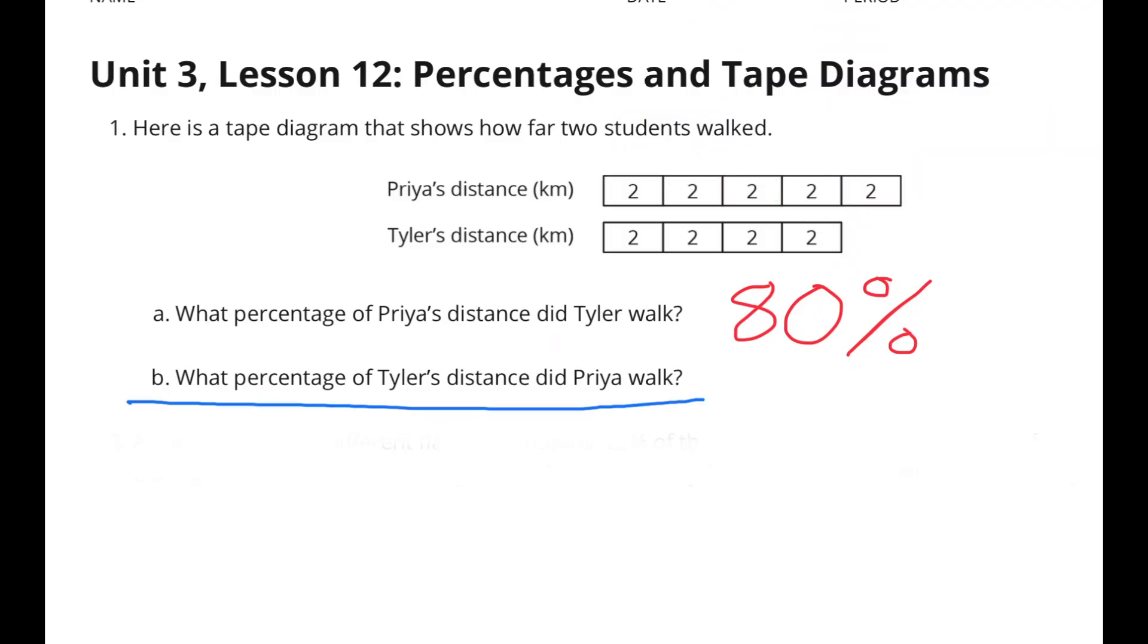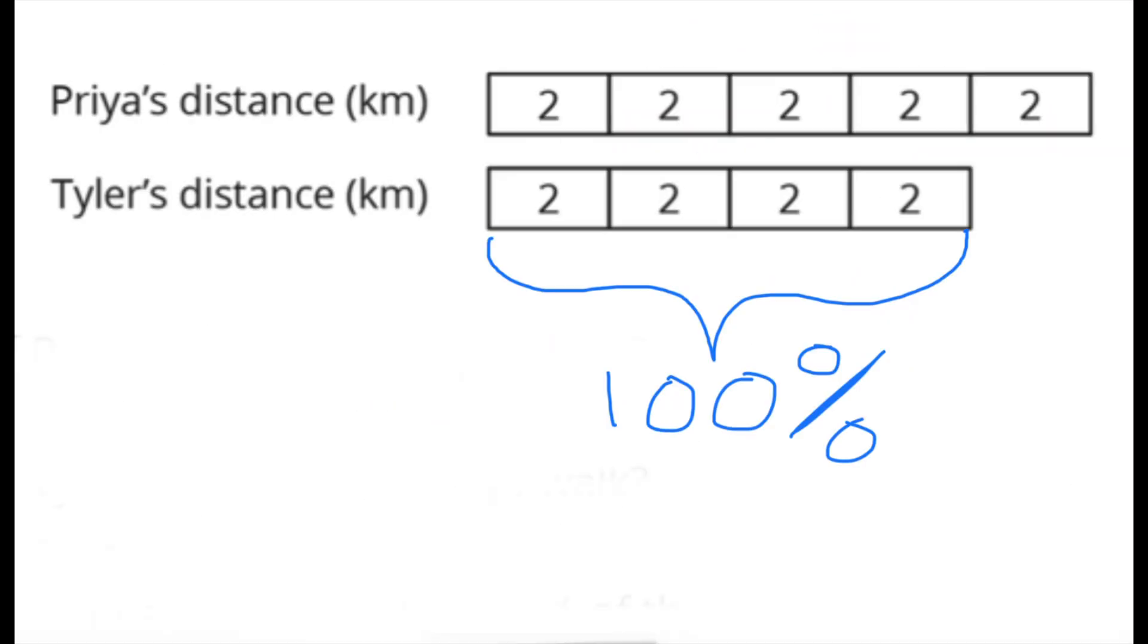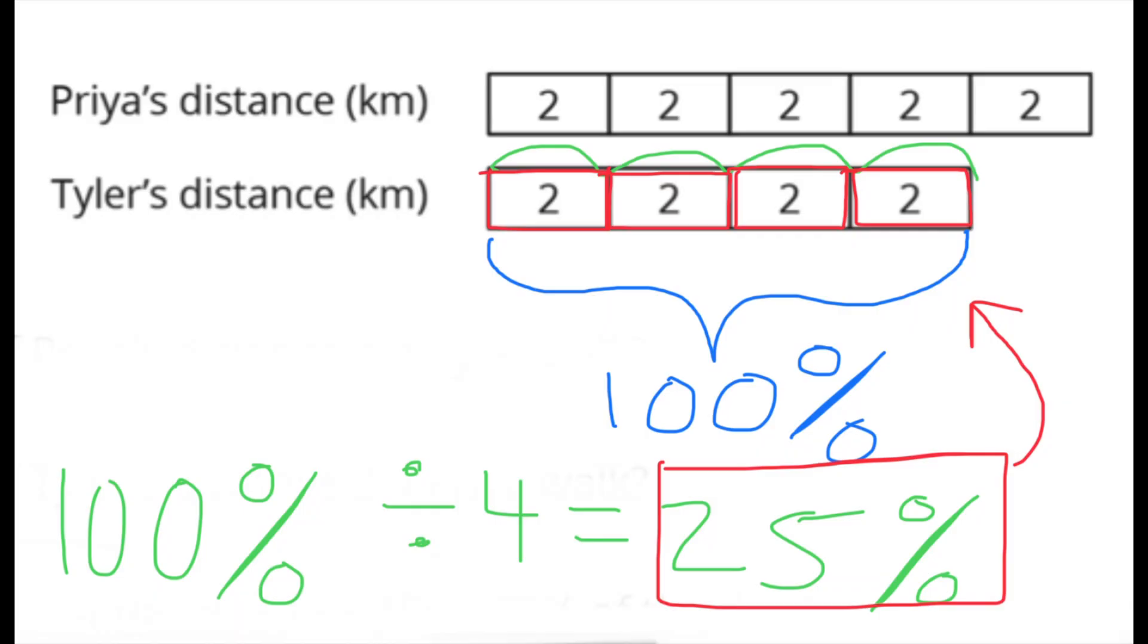What percentage of Tyler's distance did Priya walk? Tyler walked four sections, each section representing 2 kilometers, while Priya walked five sections with each section representing 2 kilometers. 100% of Tyler's walk divided by 4 equals 25%. So that extra section, or that extra 2 kilometers that Priya walked, is worth another 25%. So in total, Priya walked 125% compared to Tyler's 100%.